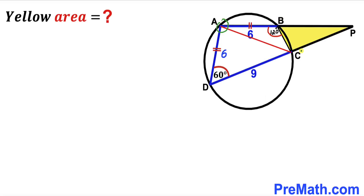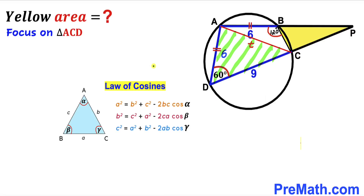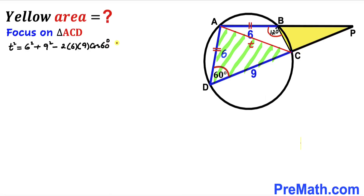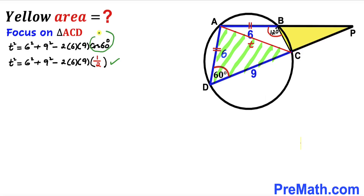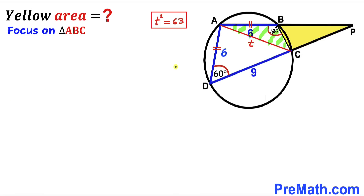In this next step I have connected vertices A and C. Let's focus on triangle ACD and label side AC as lowercase t. Applying the law of cosines on triangle ACD gives us: t² = 6² + 9² − 2(6)(9)cos(60°). Since cosine of 60° is 1/2, I have replaced it here, and when we simplify the right-hand side, our t² value turns out to be 63.